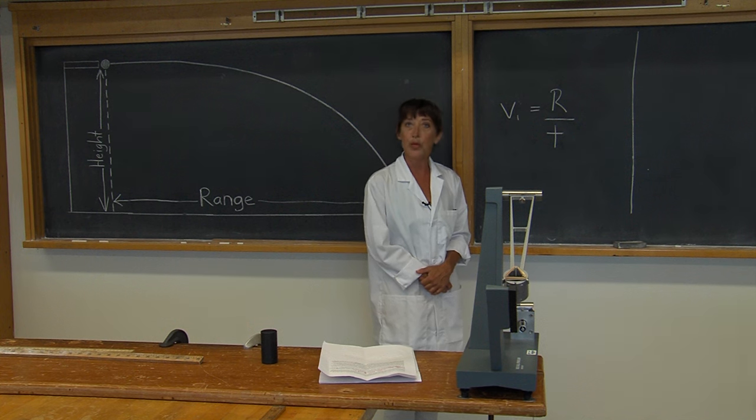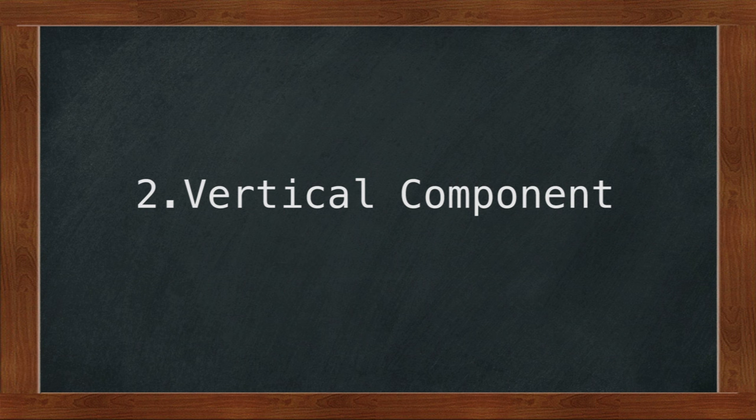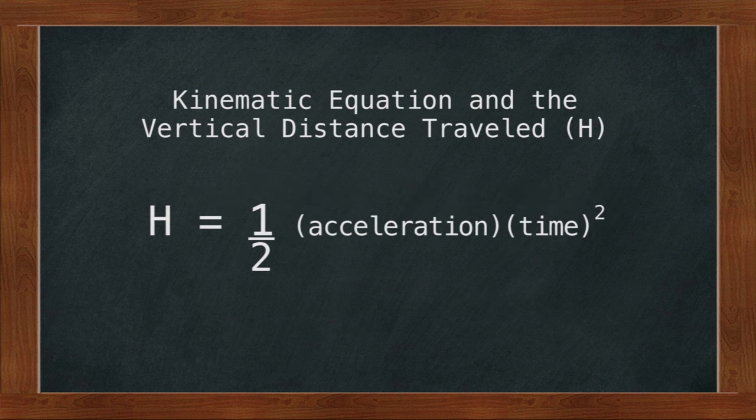To find the time in flight, we will make use of the vertical component of velocity and one of our kinematic equations, which states that the distance traveled, which in the vertical direction is height, and I will use h, h is equal to one-half times the acceleration times time squared.